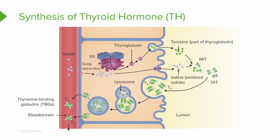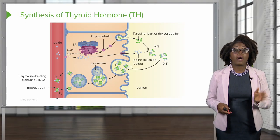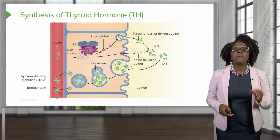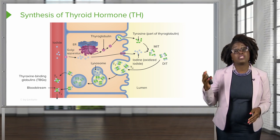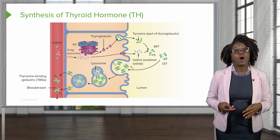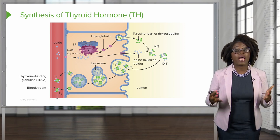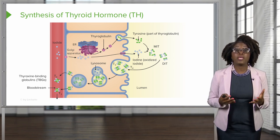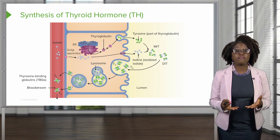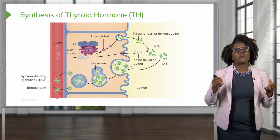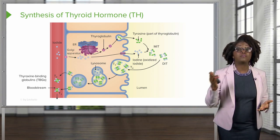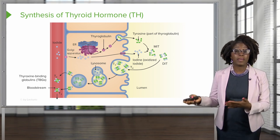T4 and T3 are transported by proteins known as thyroxine-binding globulins. Both bind to target receptors, but T3 is 10 times more active than T4. Peripheral tissues have enzymes that convert available T4 into T3 by removing one of the iodine atoms.